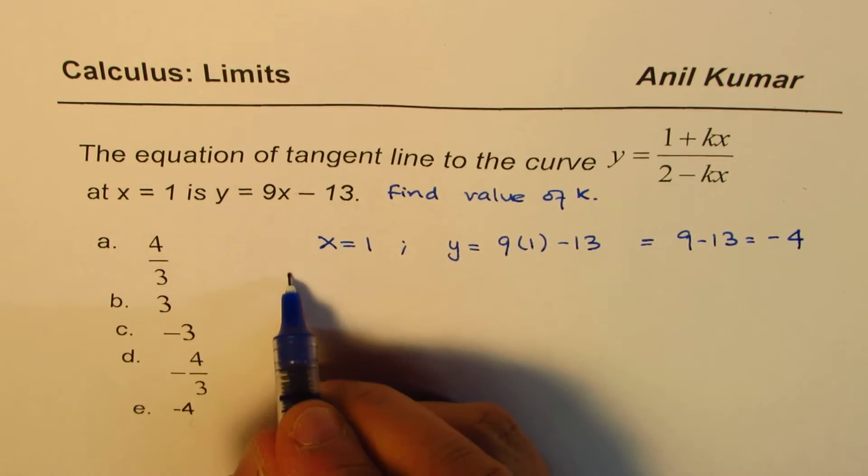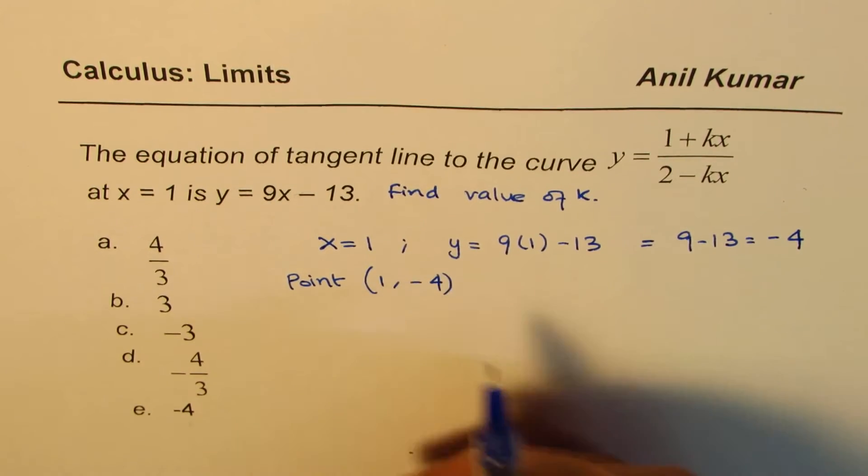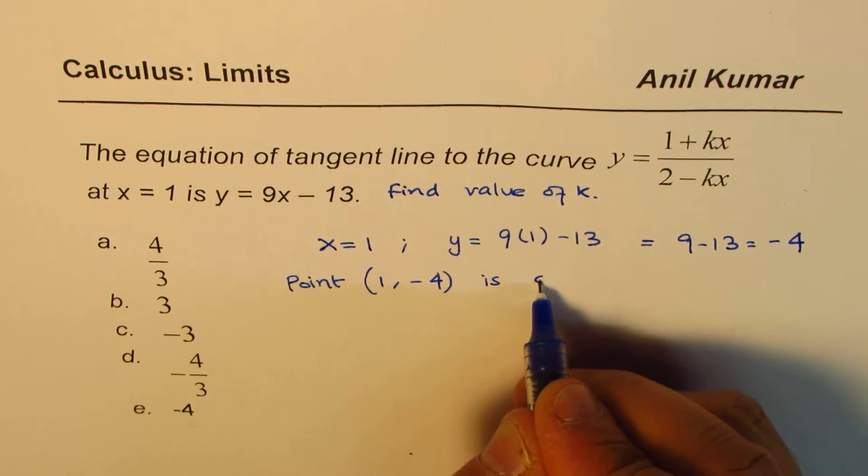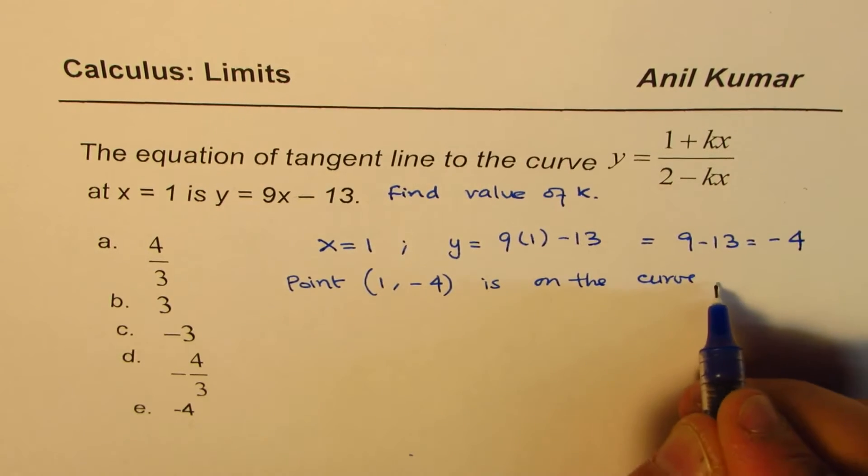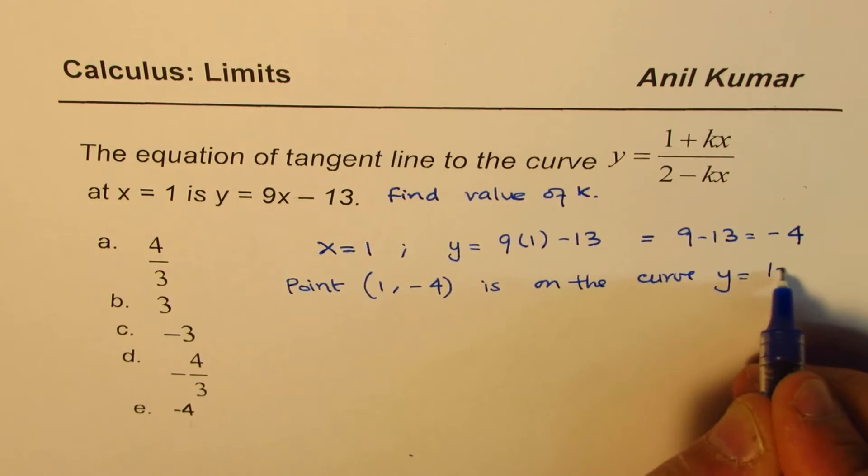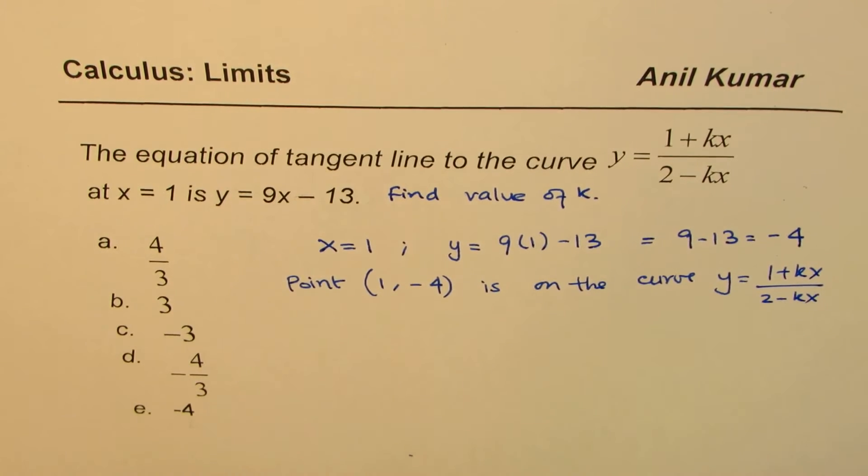That means the point (1, -4) is on the curve y = (1+kx)/(2-kx). Does it make sense to you?